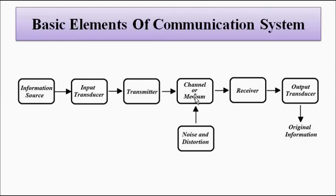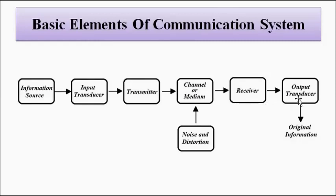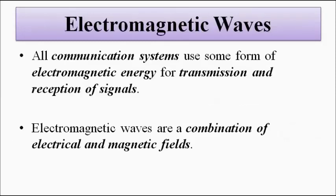The channel or medium — whether wired or wireless — serves as the connecting link between the transmitter and the receiver. The receiver consists of a demodulator which extracts the original signal, and then the output transducer converts it back into the original non-electrical form.